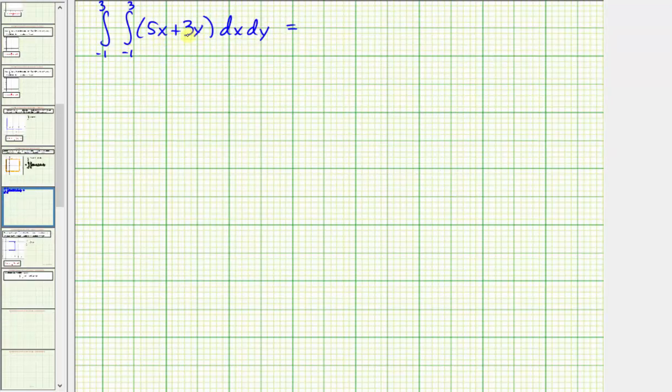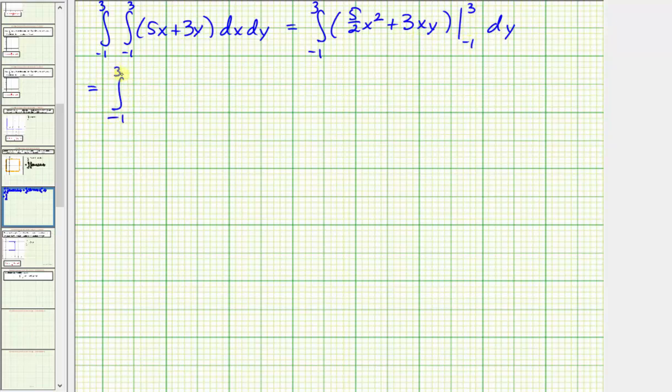We first integrate with respect to x, treating y as a constant. So we'd have five times x squared divided by two, or five halves x squared, and then for three y, we'd have plus three y times x, or three xy. So be careful here, we're substituting these values for x, not y. So we'd have five halves times three squared, plus three times three times y, and then minus five halves times negative one squared, plus three times negative one times y.